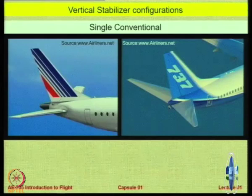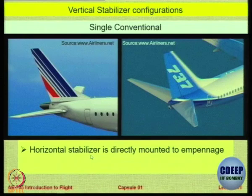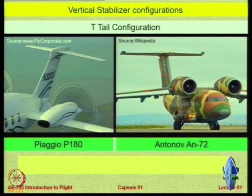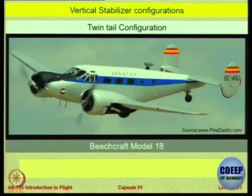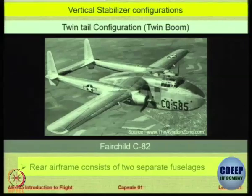The vertical tail can also be conventional — just a single one directly on the empennage, which is most common. But you may also have a T-tail that looks like a T, where the horizontal tail is moved up and away. You can also have a twin tail, with two tails mounted at the ends. The advantages of these we will discuss in the aircraft design course.